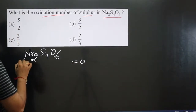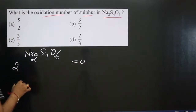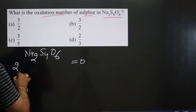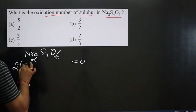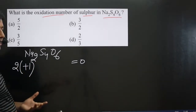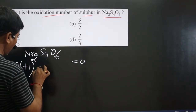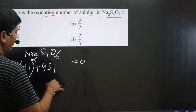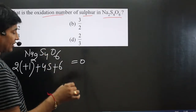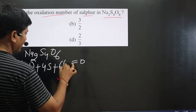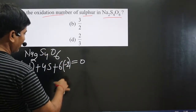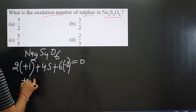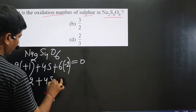Since it is a neutral compound, the sum of oxidation numbers equals zero. There are two sodium atoms; sodium is a Group 1 element, so it always has a +1 oxidation number in any compound. For four sulfur atoms and six oxygen atoms, each oxygen has a −2 oxidation number.